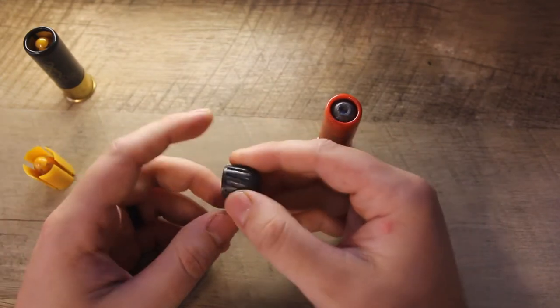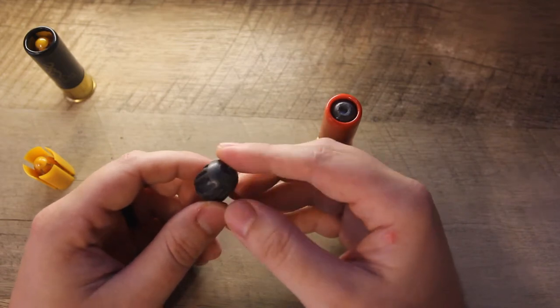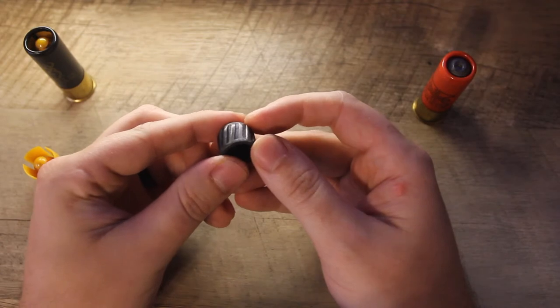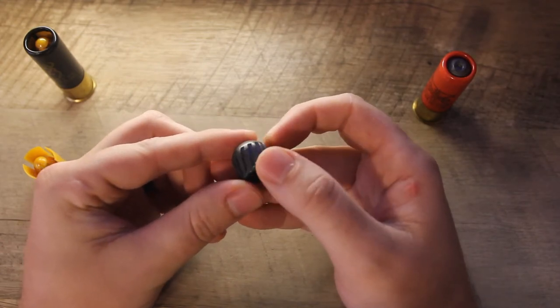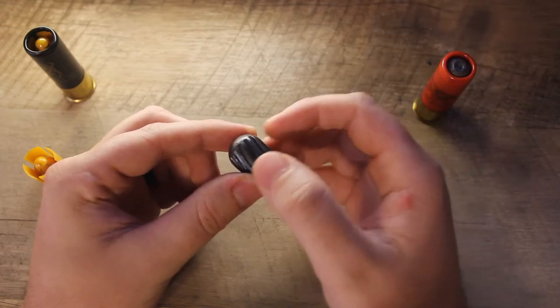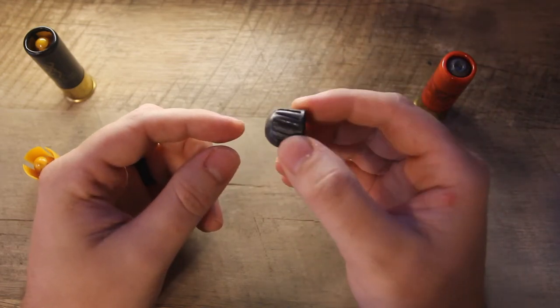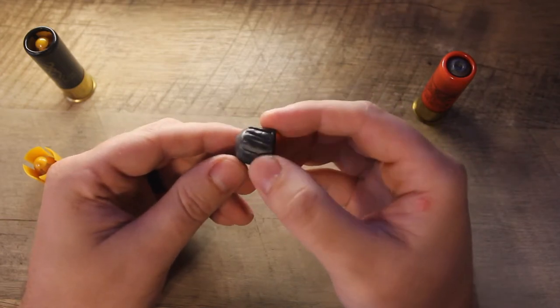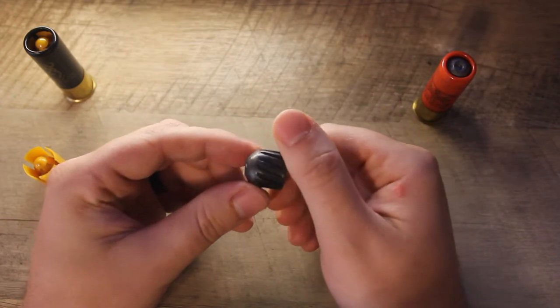We'll discuss why in just a few minutes, but essentially these grooves and ridges are designed so that they create friction between the slug and the inside of the barrel. As that projectile continues to move through the barrel, that friction is going to start to cause this projectile to spin.